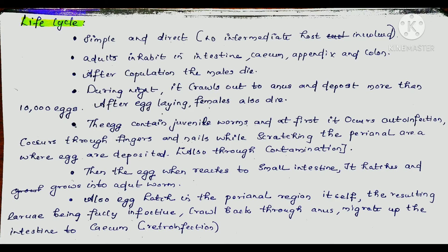After copulation, the males die. During the night, the gravid female crawls out to the perianal area and deposits more than 10,000 eggs. After egg-laying, the females also die. The egg contains juvenile worms and first it causes auto-infection — through fingers and nails while scratching the perianal area where eggs are deposited.